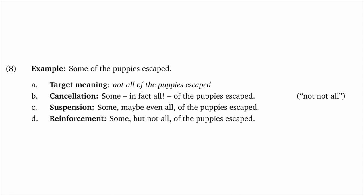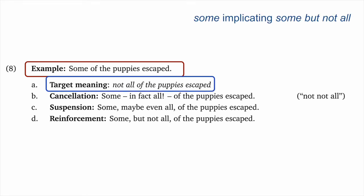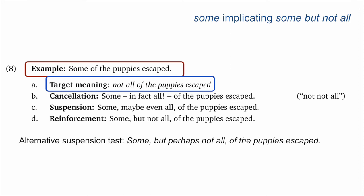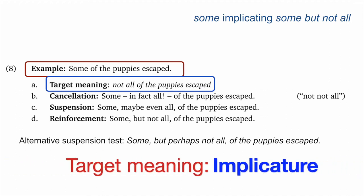The example in 8 is another classic implicature case: 'Some of the puppies escaped,' and our target meaning probes for the 'some but not all' construal of 'some.' So our target is 'not all of the puppies escaped.' For cancellation: 'Some, in fact all, of the puppies escaped' — that employs our double negation simplification. This seems consistent and supports an implicature analysis. For suspension: 'Some, maybe even all of the puppies escaped,' or 'but perhaps not all' — both are consistent. Finally, reinforcement: 'Some but not all of the puppies escaped' seems non-redundant. All signs point to it being an implicature.